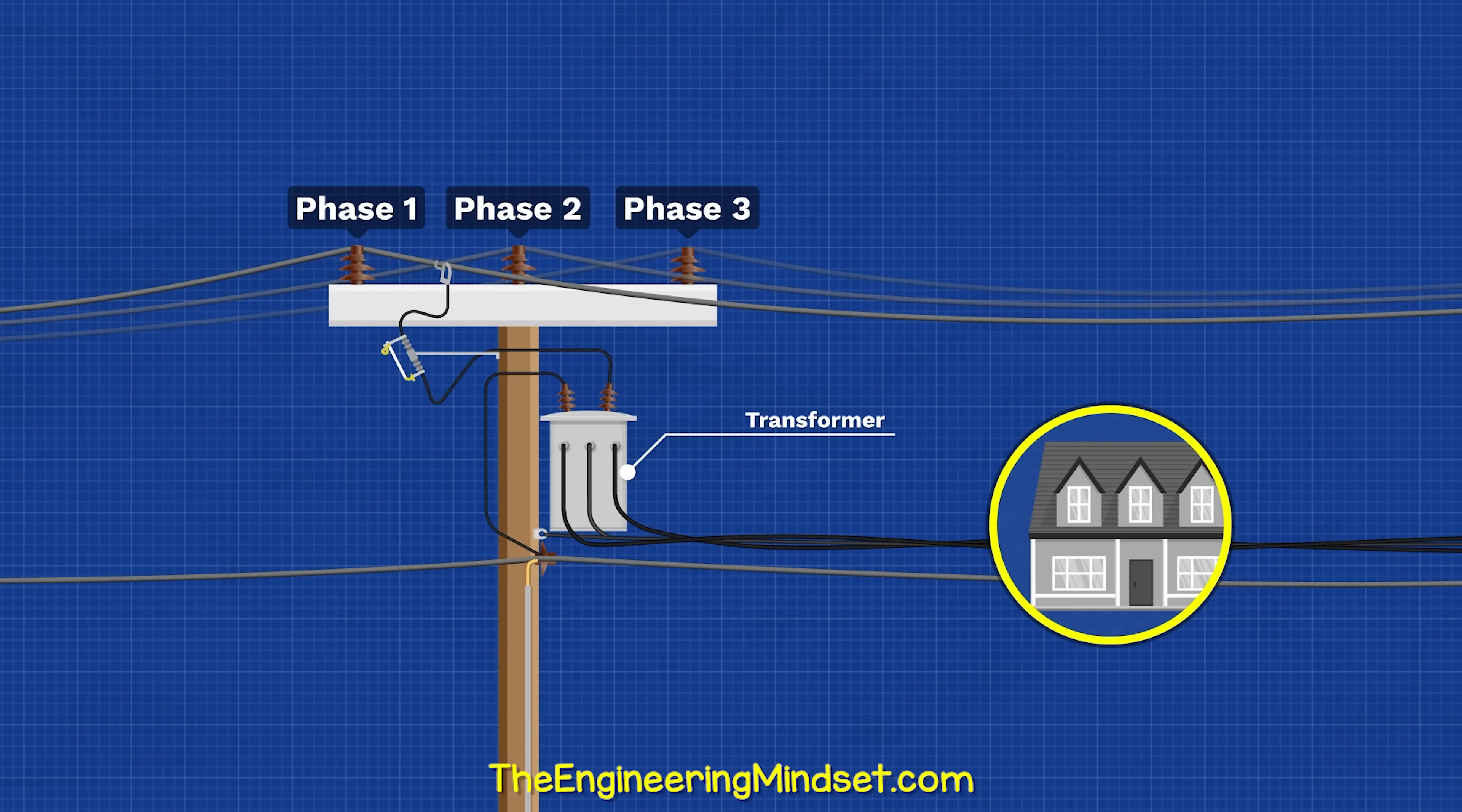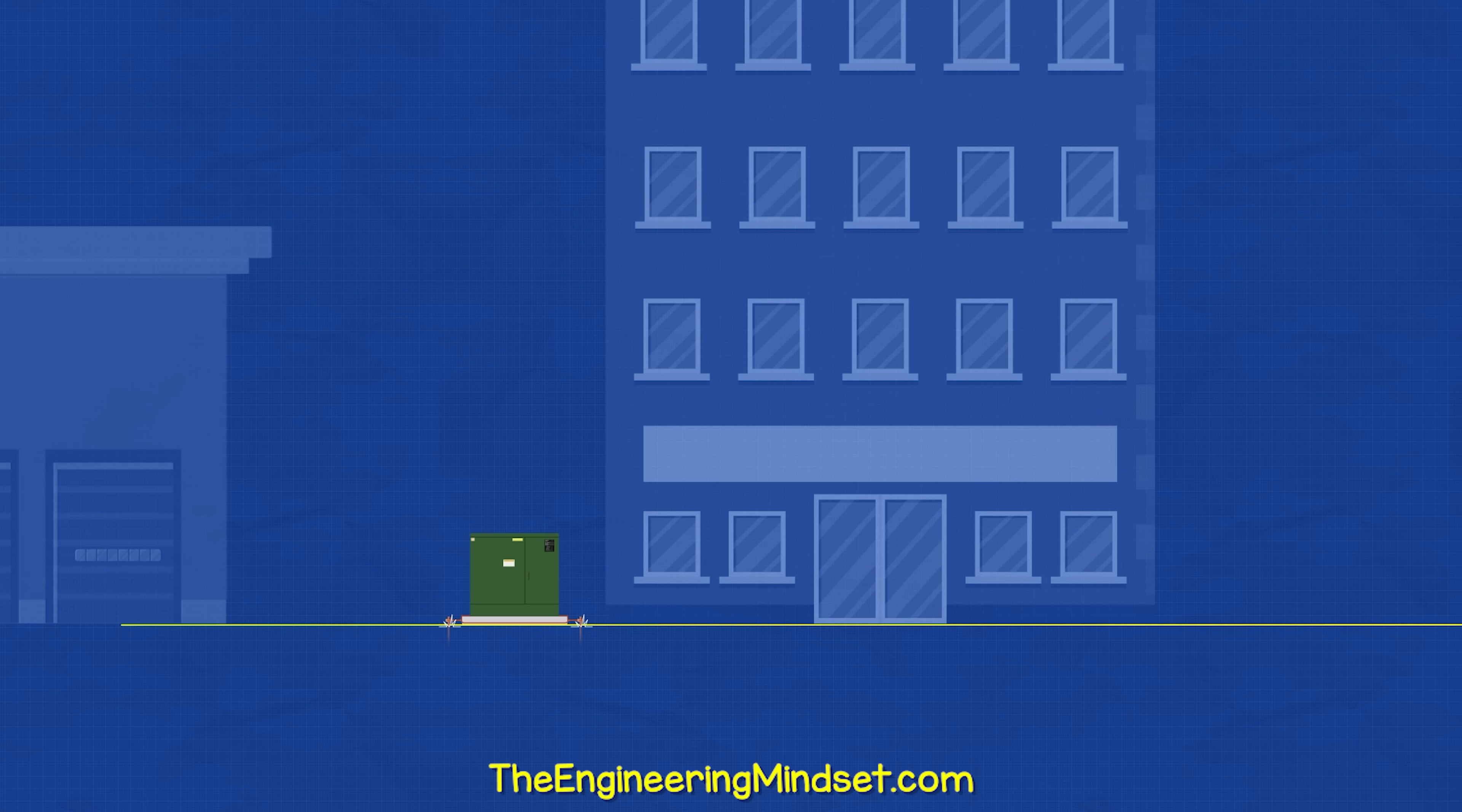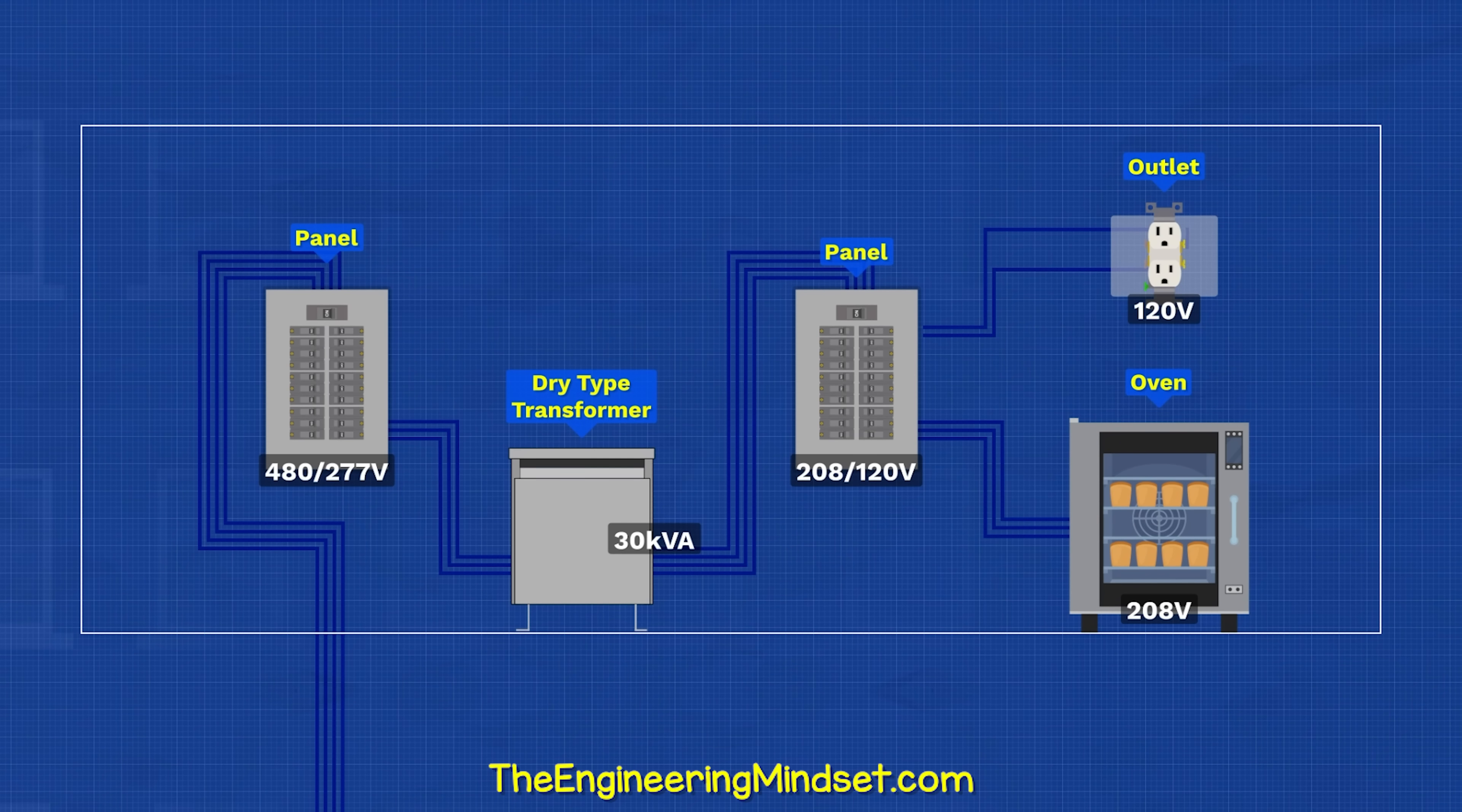In North America, domestic properties are typically provided 240 volt single phase for large appliances, or they can connect to half of that to get 120 volt for smaller appliances. Small commercial properties might be provided 208 volt three phase, which also provides 120 volt single phase. Larger properties might receive 480 volt three phase and 277 volt single phase. This will power large equipment and then another transformer will reduce this down to 208 volt three phase, 120 volt single phase when it's needed.